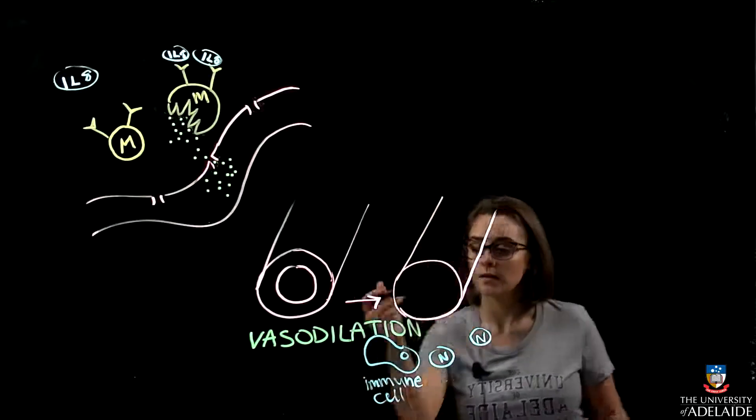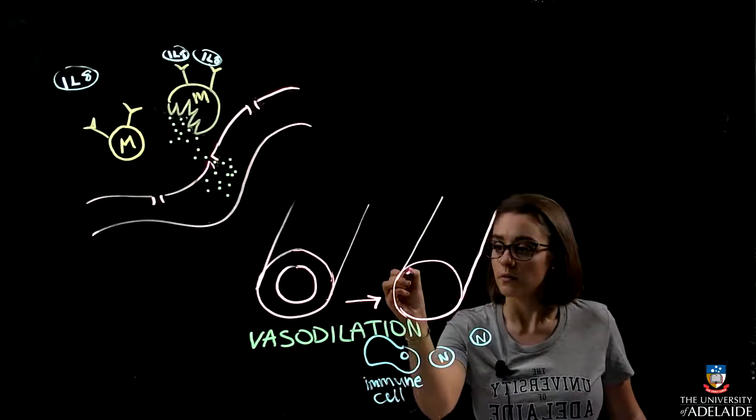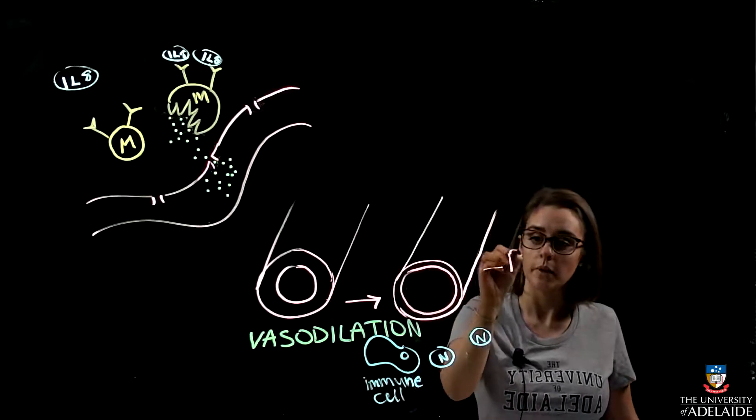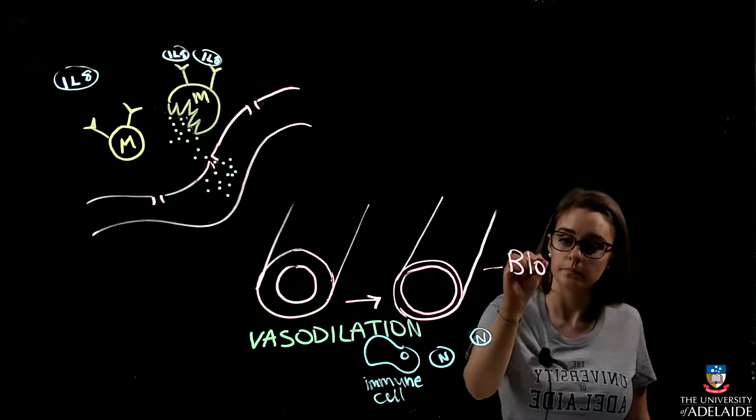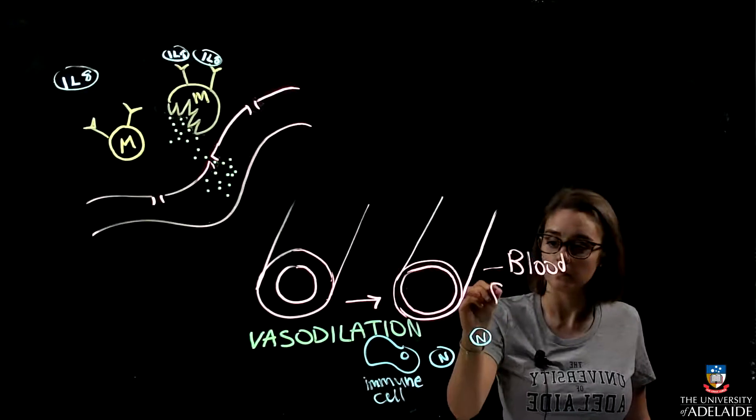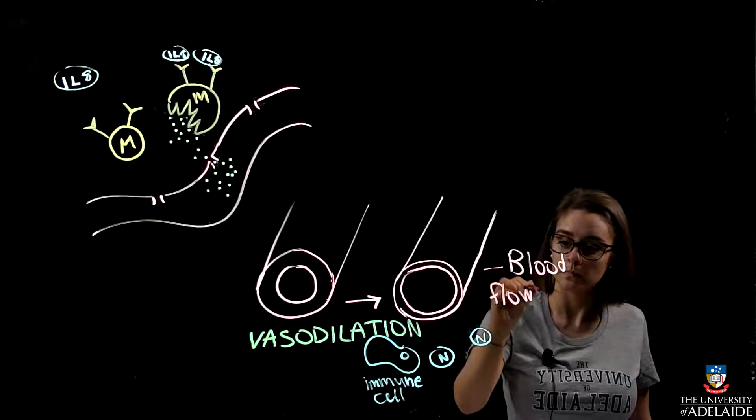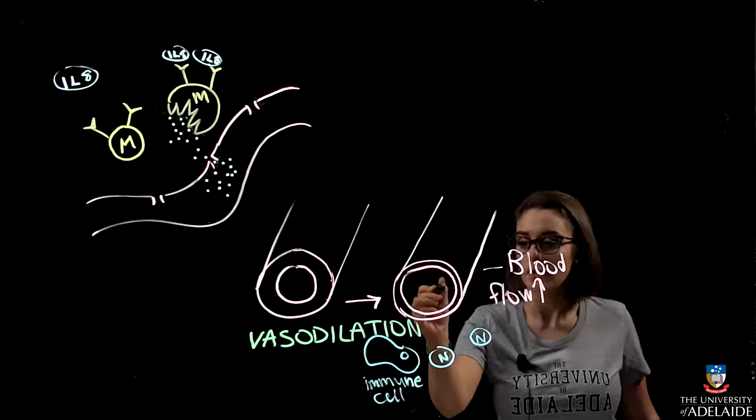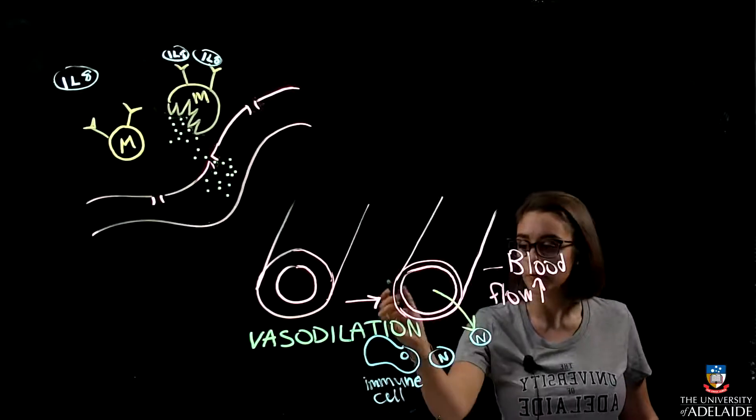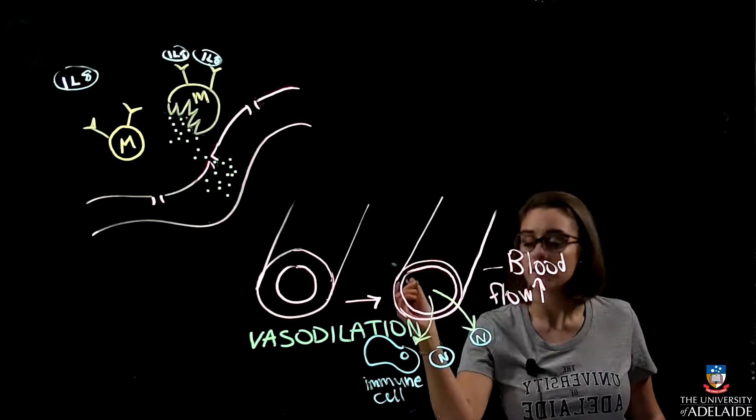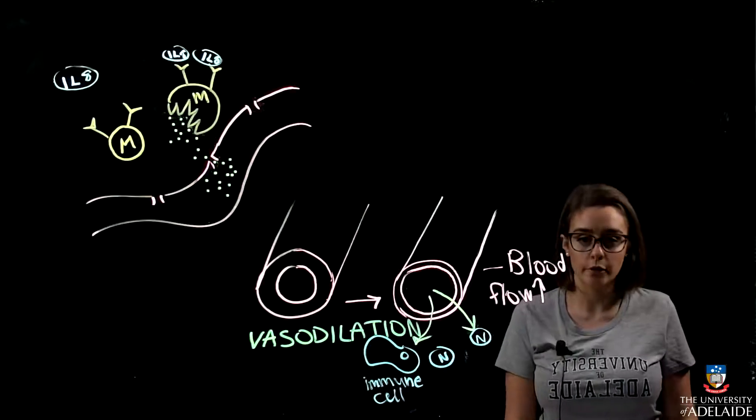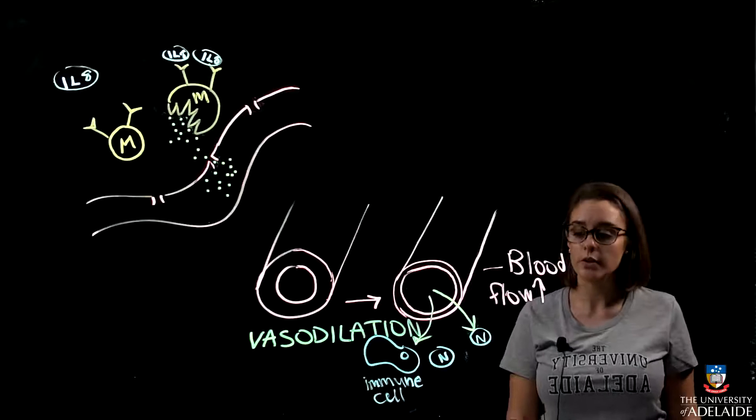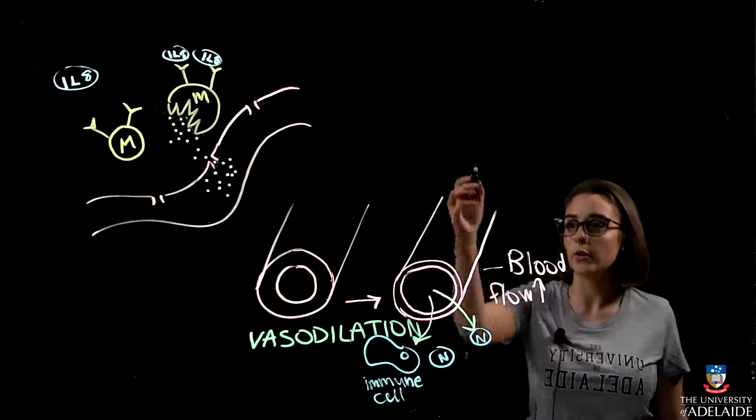This means the vessel opens up more and blood flow is increased. Due to the blood flow increasing, there is a great influx of neutrophils and other immune cells into the area. Clinically, the increase in blood flow causes the gingiva to become really red, really swollen, and this is seen as bleeding on probing in the sulcus.